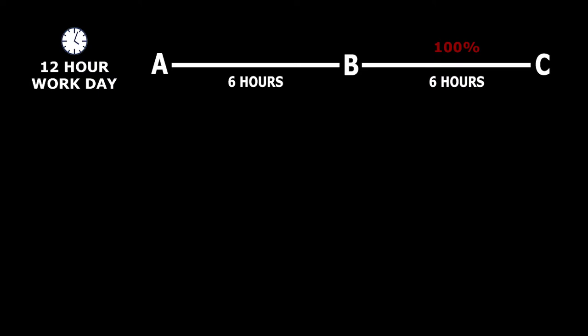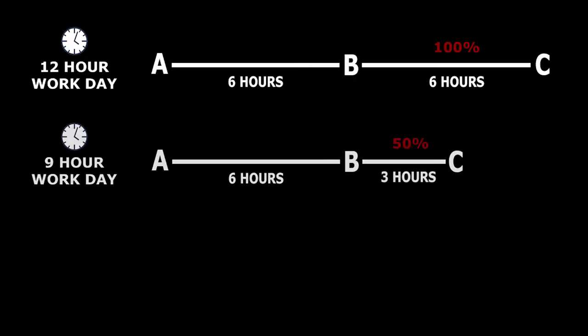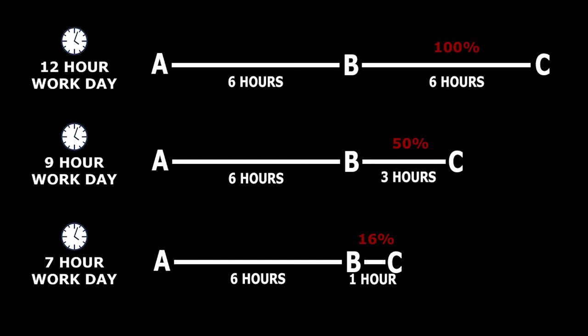This means that while our necessary labour is fixed, the length of the working day is not — it can fluctuate. For example, a working day of 12 hours and a 100% exploitation rate can be represented as A to B six hours, B to C six hours. A working day of nine hours and an exploitation rate of 50% can be represented as A to B six hours, B to C three hours. And a working day of seven hours with an exploitation rate of 16% as A to B six hours, B to C one hour.